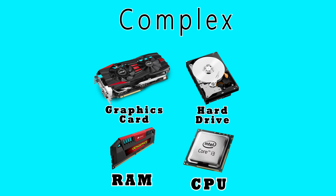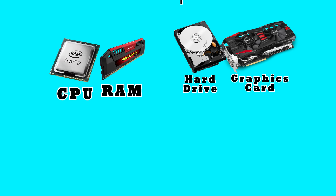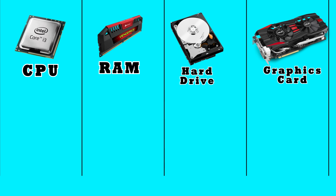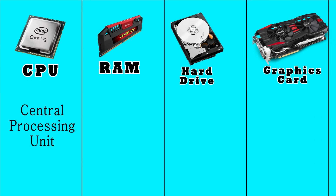Now let's move on to the more complex parts — the ones that deal with data. The four main components to keep in mind here are CPU, RAM, hard drive, and graphics card. Keep in mind that CPU is also known as the central processing unit or processor. These terms all refer to the same thing; they are completely interchangeable.